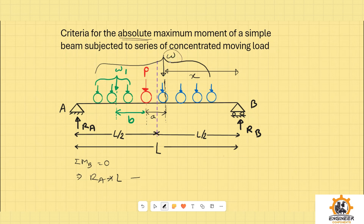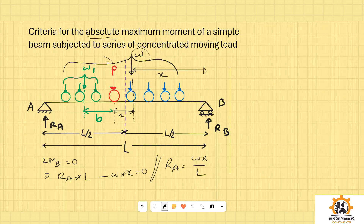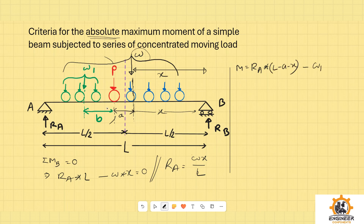Taking W to represent the total load, we can see W into distance x is equal to zero. R is given by Wx divided by L. So we can see the left portion bending moment. Bending moment M is equal to R into distance minus W1 into distance. R equals W divided by L, so x will be equal to Lx minus Ax minus x squared minus W1b. This is M.